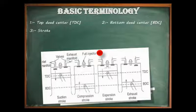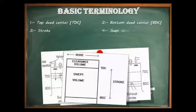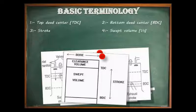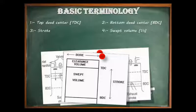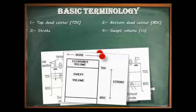The fourth term is swept volume, also known as displaced volume, denoted by either VS or VD. The swept volume is the volume of space generated by the movement of the piston from one dead center to another dead center. As shown in this figure, the swept volume is the volume between the TDC and BDC.